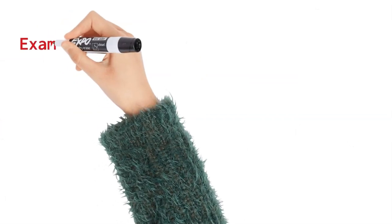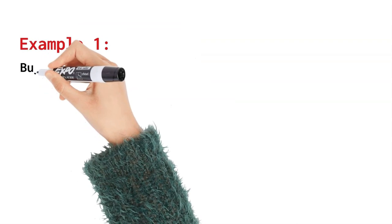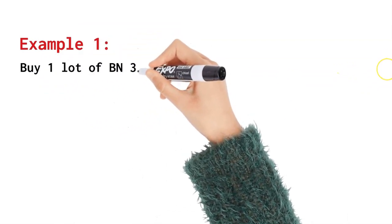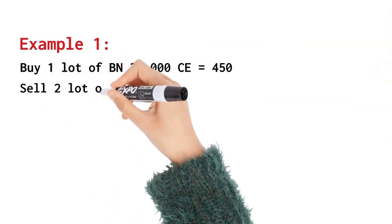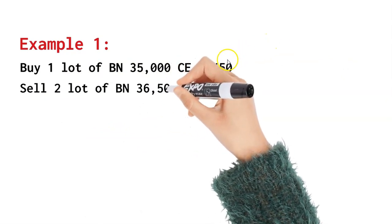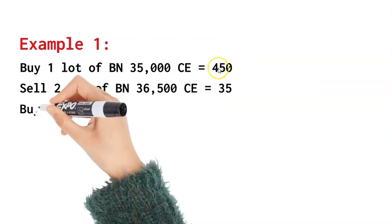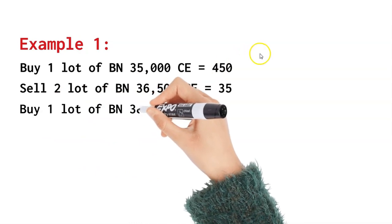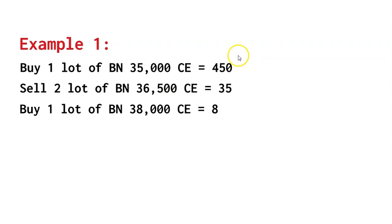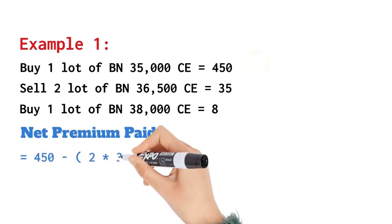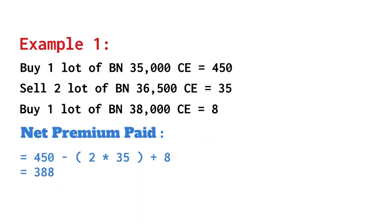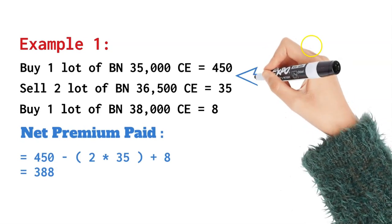I'm giving a live example taken from the markets when Bank Nifty was around 35,000 to 35,200. The first leg is to buy at-the-money or in-the-money, and you employ this when you think markets are going to go up. About 70% of the time markets tend to go up. The same strategy can be done with puts — a long put butterfly spread — if you predict markets are going down. In this example, we're buying one lot of Bank Nifty 35,000 CE at 450 rupees.